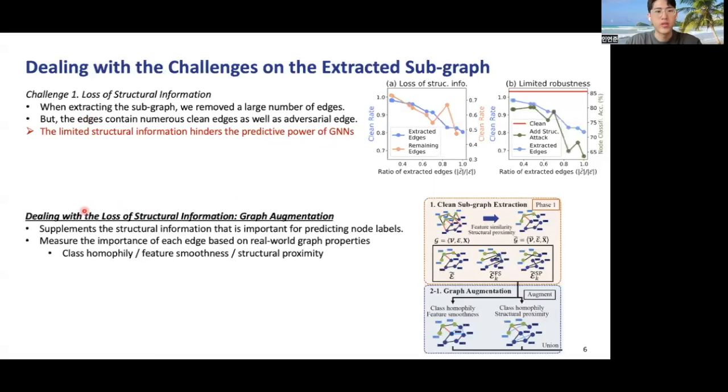So we deal with this issue by graph augmentation technique, where we supplement the edges that are important for predicting the node labels. The importance is measured by three real-world graph properties, such as class homophily, feature smoothness, and structural proximity.